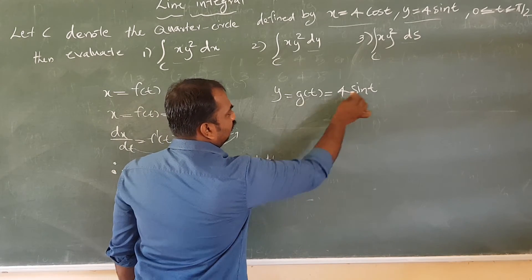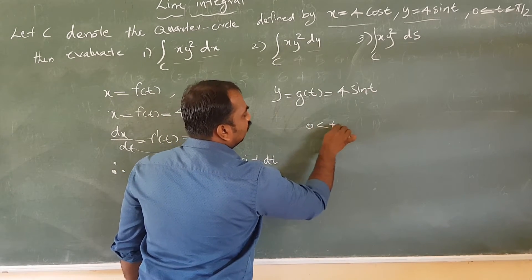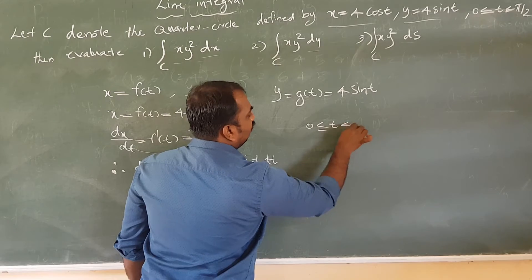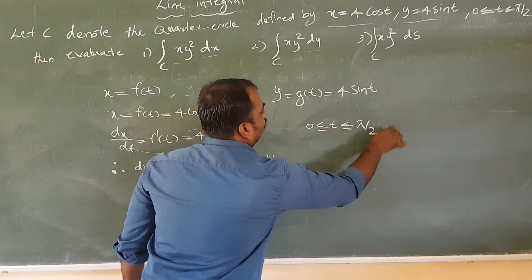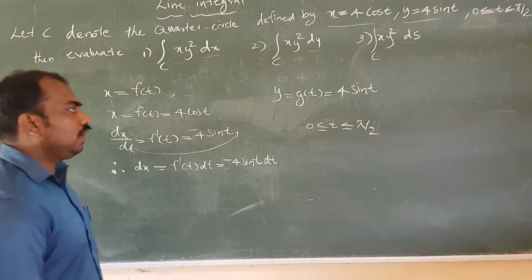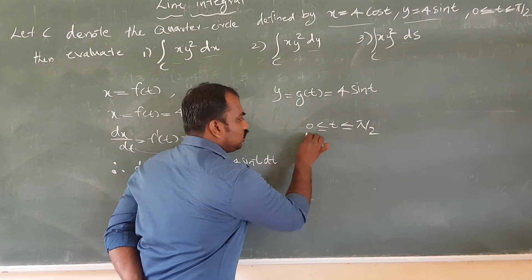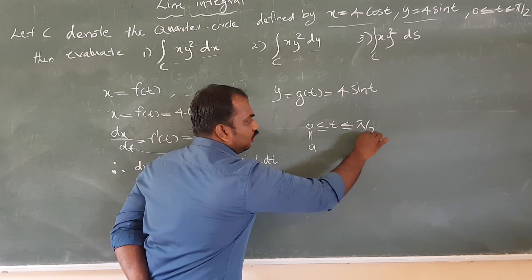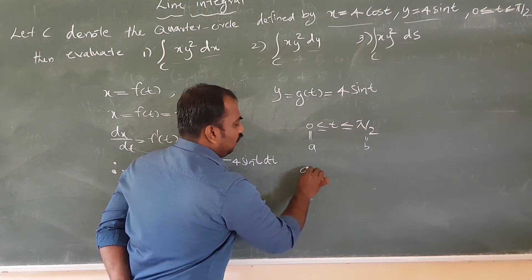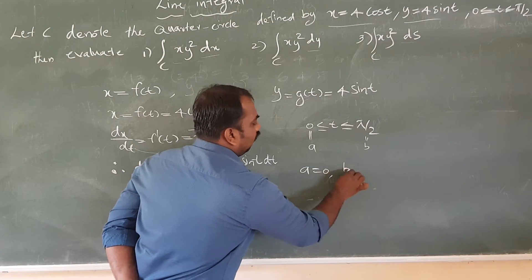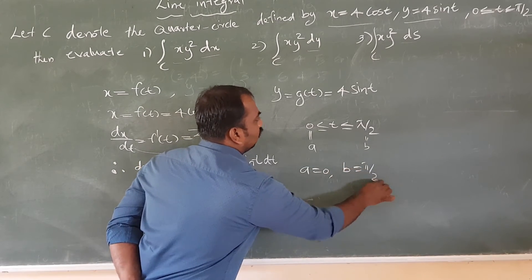The variable is t, and t ranges from 0 to π/2. So we get a equal to 0 and b equal to π/2.